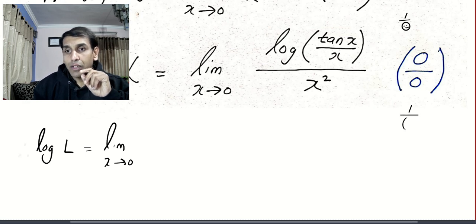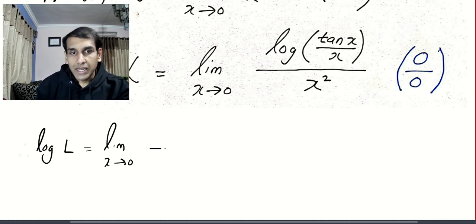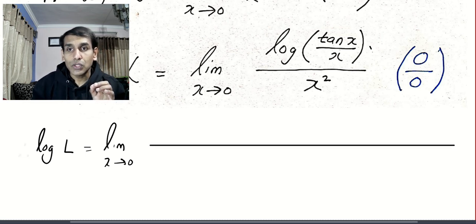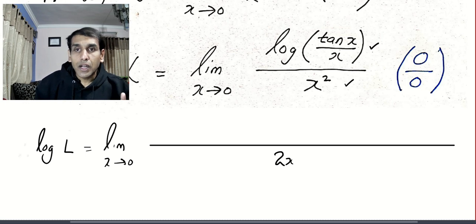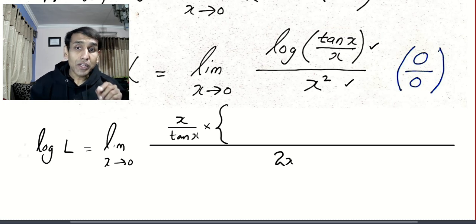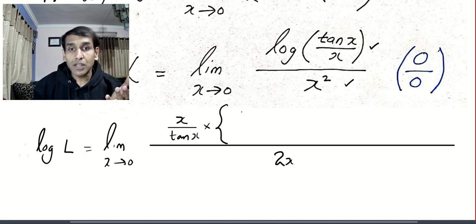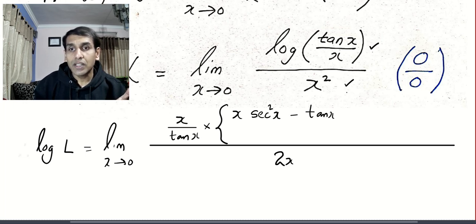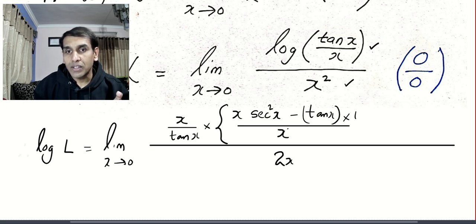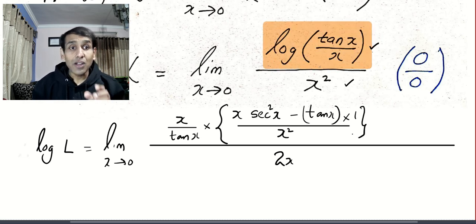If you have 1/a divided by b, it becomes b/a. I'm going to apply L'Hôpital's rule, differentiating numerator and denominator separately. The denominator is simple — I write 2x. For log(something), the derivative is 1 over that thing, multiplied by the derivative of the inside using the quotient rule: denominator times derivative of numerator minus numerator times derivative of denominator, all divided by denominator squared.